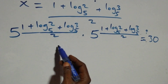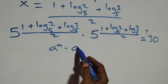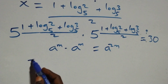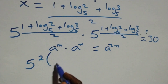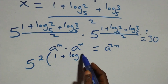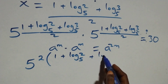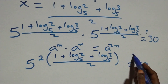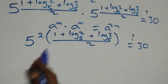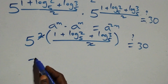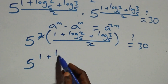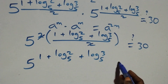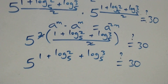Since the bases are the same and the powers are equal, using the rule a^m times a^m equals a^(2m), we write this as 5 raised to power 2 times (1 plus log₅2 plus log₅3) all over 2. The 2 in the numerator and denominator cancel, giving 5 raised to power (1 plus log₅2 plus log₅3) equals 30.